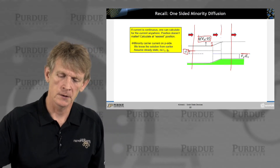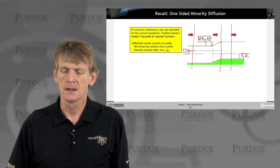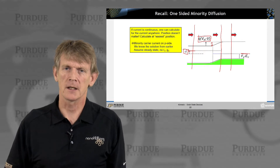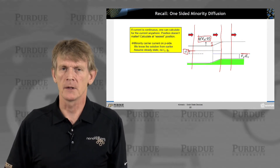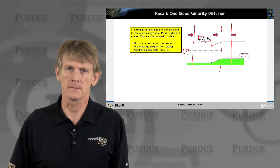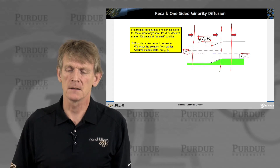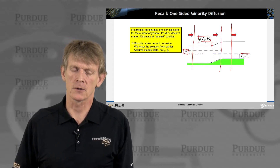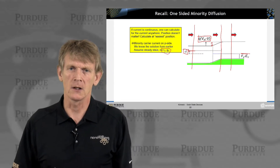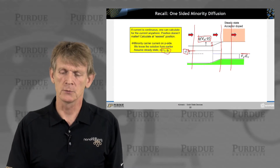We had determined at a particular boundary condition some electron density that was being injected, and we calculated how this electron density — the minority carrier density — decayed into the region of high doping. We'll repeat this calculation now, but connect it to the current. We had also assumed there is no recombination or generation, and that's the calculation we'll pursue now.